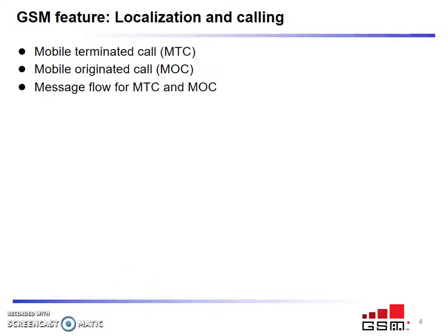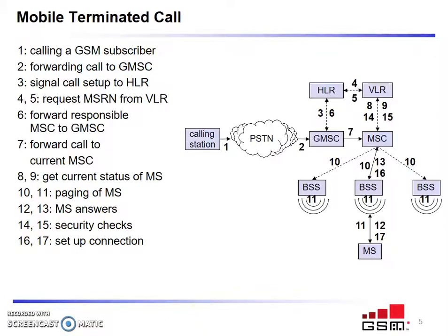Localization and calling. We have these terms to understand: mobile terminated call, mobile originated call, and the message flow between MTC and MOC. As the term tells you, in a mobile terminated call, the call ends with the mobile station. The calling station communicates with the PSTN, which is linked with the gateway MSC (GMSC). This GMSC communicates with the HLR — the home location register — to get information about the particular mobile.